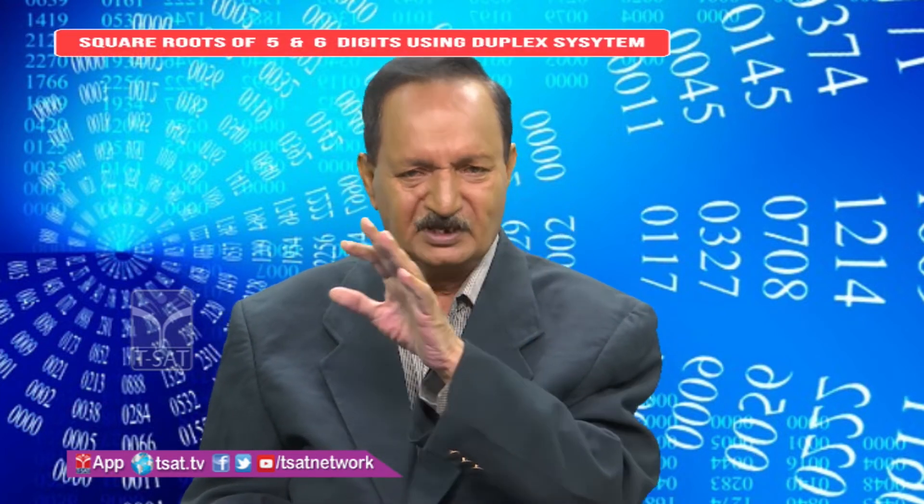Now let's discuss how to find the square root of 5 and 6 digit numbers. For 3-4 digits there are 2 groups, for 5-6 digits there are 3 groups, for 7-8 digits there are 4 groups. The number of groups determines how many digits will be in your answer. If you have 2 groups, you have to find a 2-digit answer.